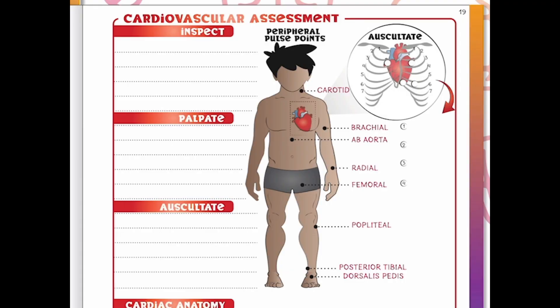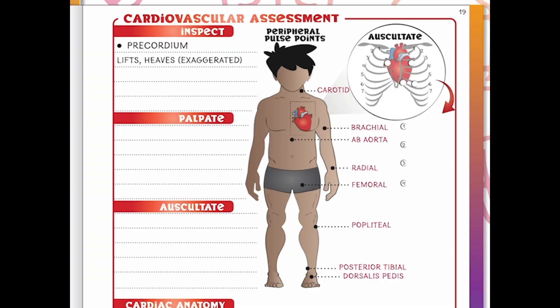Now we get into the bigger details of our cardiovascular assessment, starting with inspection. We're going to look at the precordium — the region of the chest wall overlying the heart and lower thoracic cavity. This is the area on the front of the chest where the heart is located, and where you can feel the heartbeat most prominently. This is also where we listen to heart sounds with our stethoscopes. When inspecting, we look for any lifts or heaves — notable or exaggerated rises and falls of the chest, or visible pulsations.